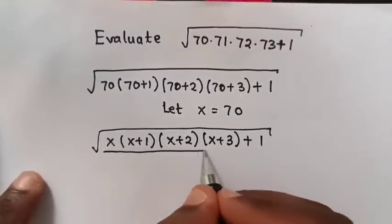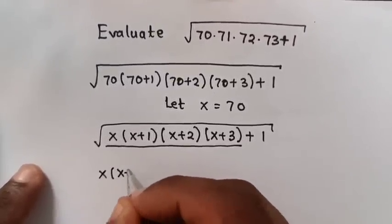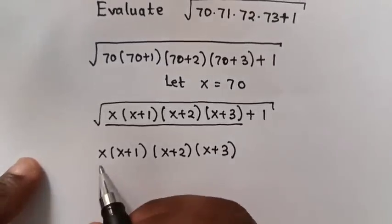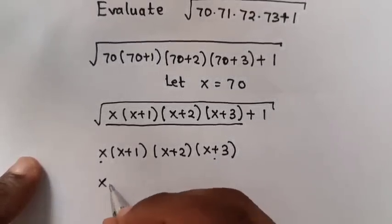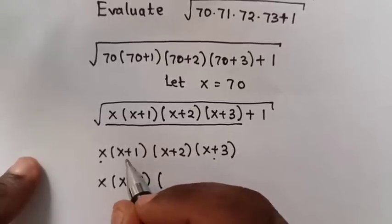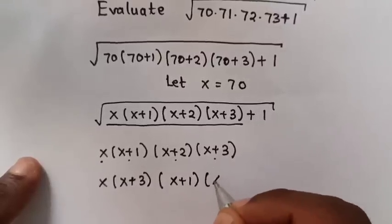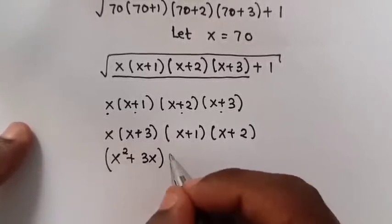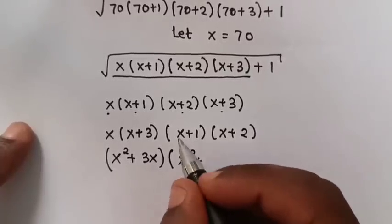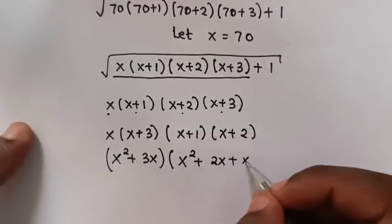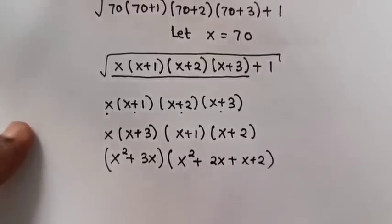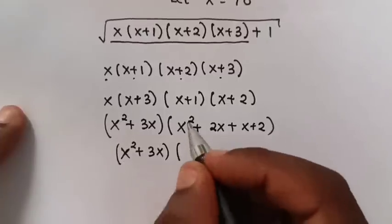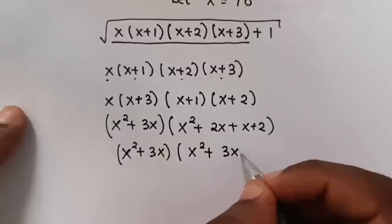So from this expression with x, which is x times x plus 1 times x plus 2 times x plus 3, we multiply first x times x plus 3, then times x plus 1 times x plus 2. This will be x squared plus 3x, bracket times x squared plus 3x plus 2.